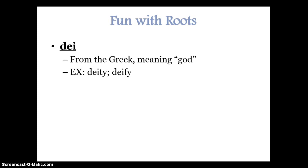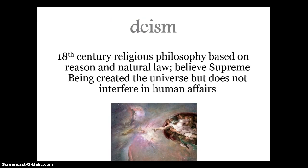Last time with fun with roots, we have Dei from the Greek meaning God — examples are deity and deify. Deism is the next vocabulary word: an 18th century religious philosophy based on reason and natural law, with the belief that a supreme being created the universe but does not interfere with human affairs. Pretty much, God created the universe and everything in it, but he does not come down to earth and interact with us — he just lets us be on our own and make our mistakes and grow as we need to.